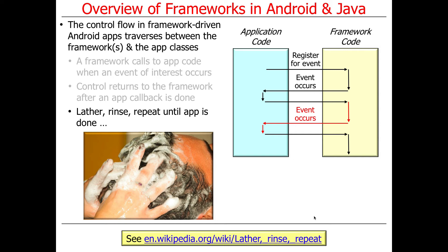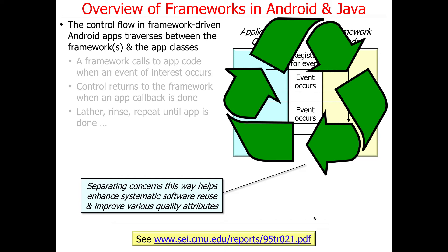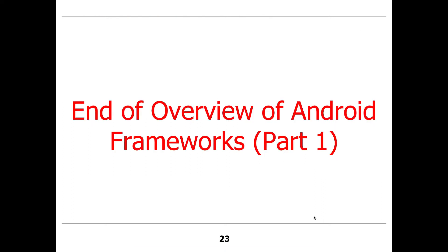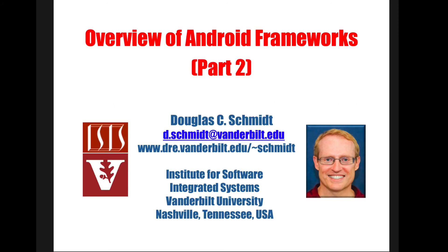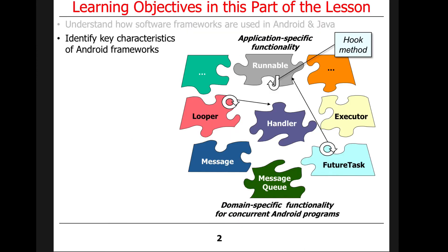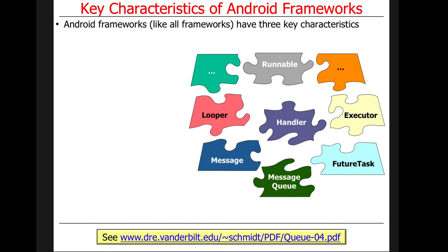That's the basic flow of control in an event-driven program. By separating concerns in this manner, we get to reuse all this software that comes out of the box in the form of all the framework code and framework classes. You just have to fill in the blanks with the stuff that differs — what you're doing for a specific application. Now we're going to talk about some of the key characteristics of Android frameworks. Obviously, a lot of what I'll describe is also relevant for other kinds of frameworks.